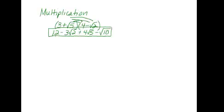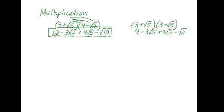I have one more example: what if we multiply 3 + √5 with its conjugate, 3 - √5? We get 9 - 3√5 + 3√5 - √25. We can take the square root of 25, which is 5. Now I have two integers to combine, giving 4, and the -3√5 and +3√5 cancel. So we're left with a rational answer. Conjugates give pretty nice outcomes when multiplied, and here is another example of that.